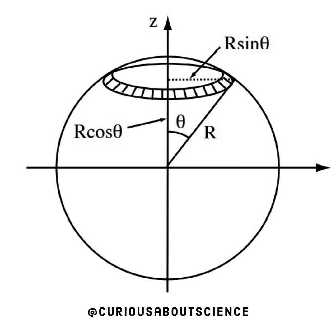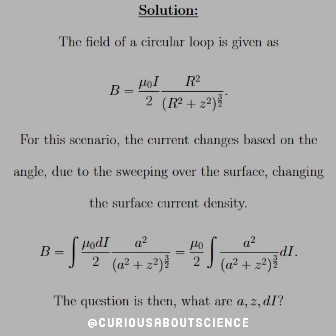So that's how we'll modify the result of the circular loop. Given that the field of a circular loop is B equals mu naught I over 2 times R squared divided by R squared plus Z squared to the 3 halves, we can modify this based on the fact that I changes with respect to theta.